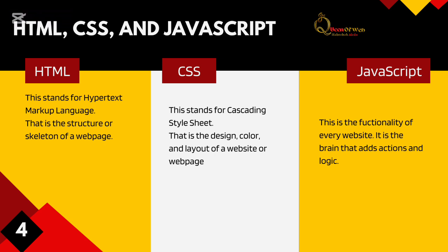CSS can be signified as adding flesh to your skeleton. You already have a skeleton — that is the work of HTML — and now adding skin to it makes it look exactly like what you want. Whether you want it to look like a human or a lion, that is the work of CSS.